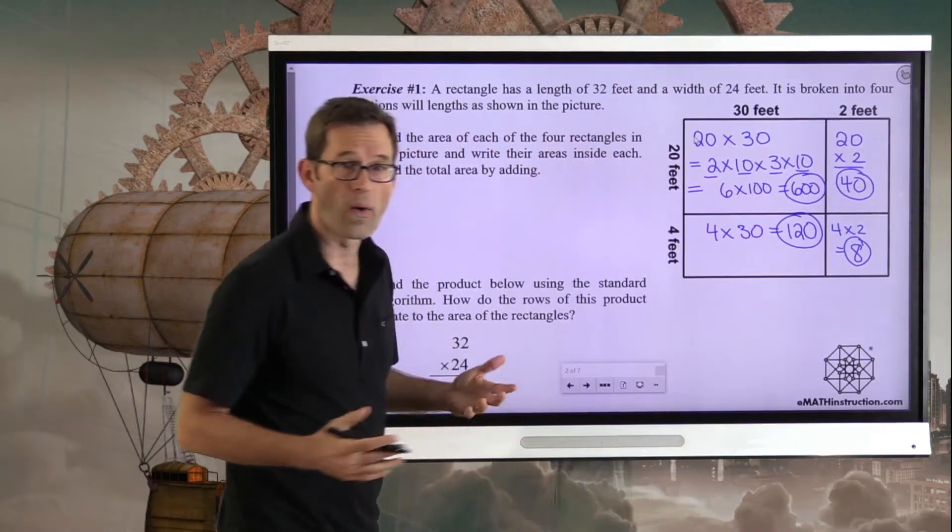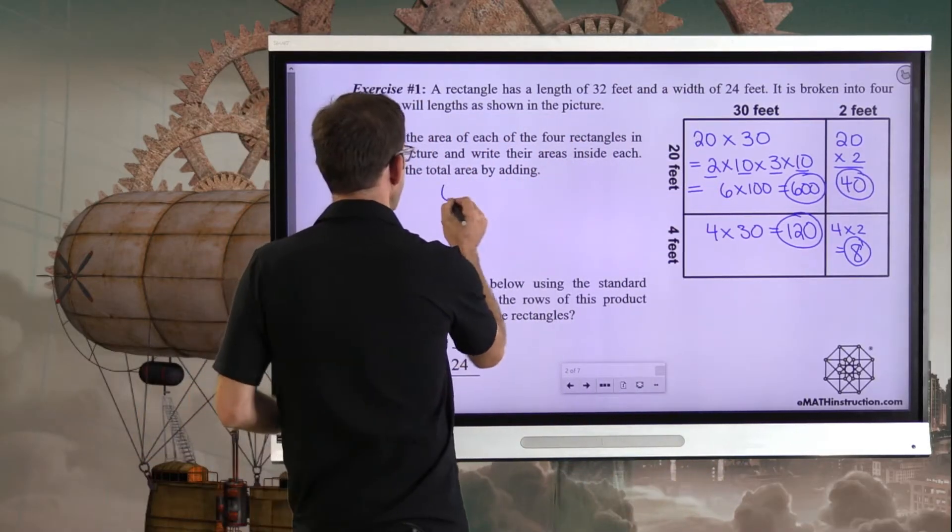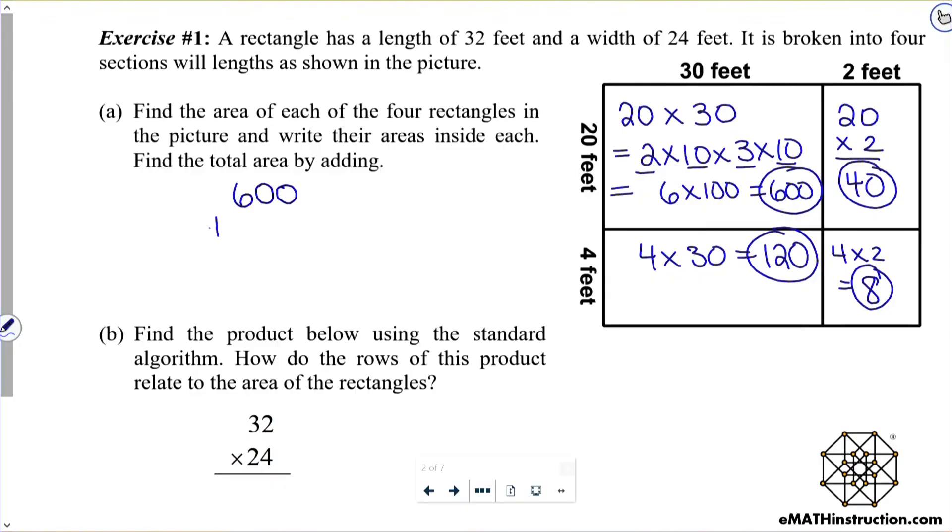Our rectangle that is 20 feet by 2 feet is pretty easy, that's simply 20 times 2, and we should all know that's 40. Similarly, 4 times 30 is 4 times 3, which is 12, with another zero tacked on. And finally, the easiest of all is our rectangle that is 4 by 2, and that's 8.